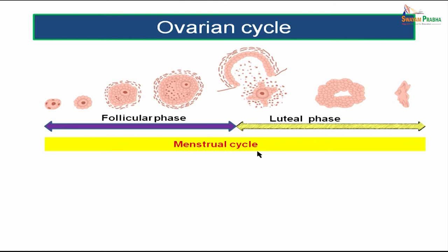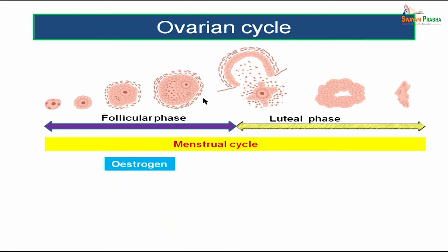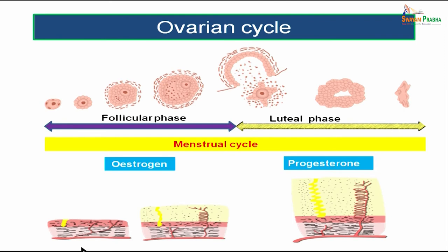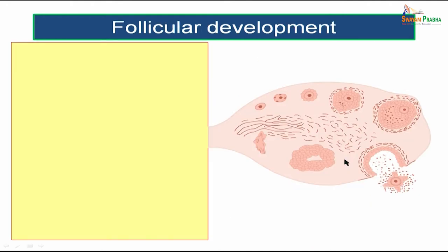The ovarian cycle can be compared with the menstrual cycle. In the follicular phase, follicles liberate estrogen, which acts on the endometrium resulting in proliferation of the endometrial layer. In the luteal phase, the corpus luteum liberates progesterone, which acts on the endometrium resulting in the secretory phase of the menstrual cycle.